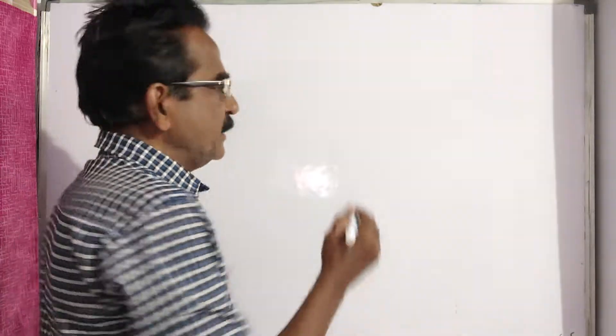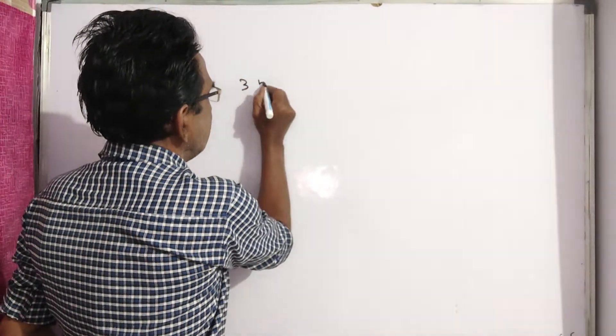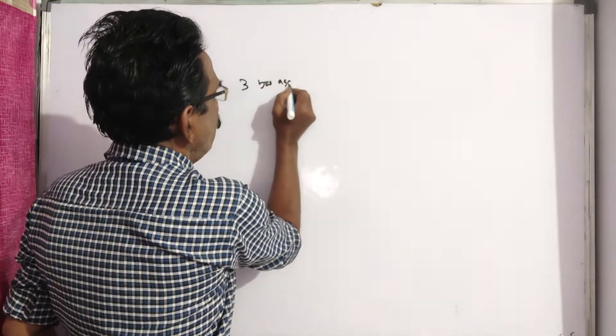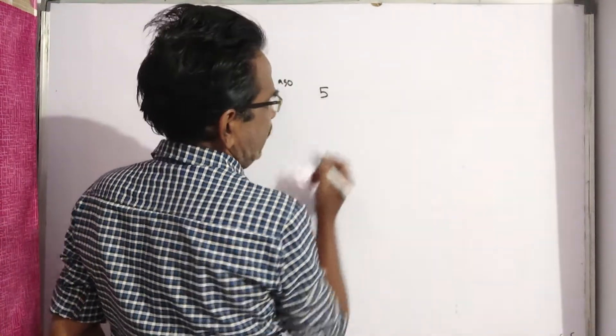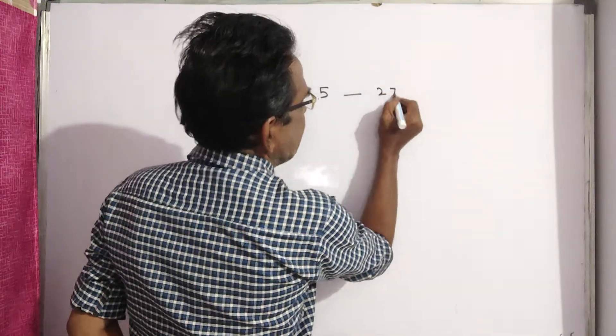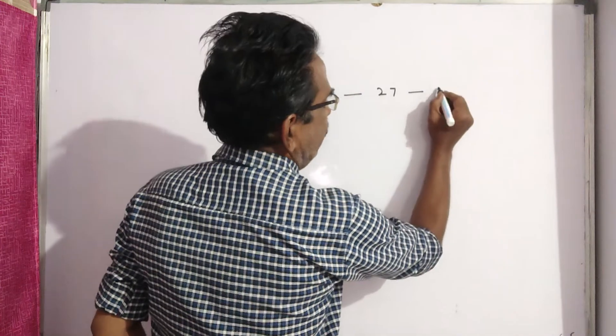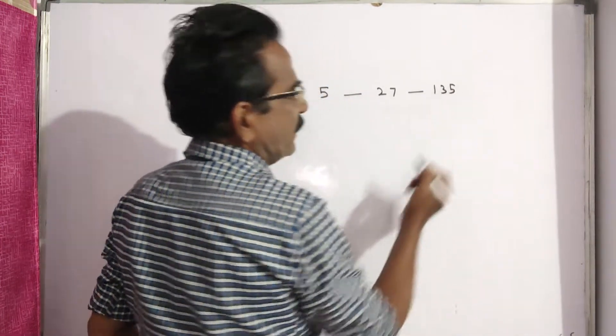This is a simple problem, friends. Three years ago, the average age of five members of a family is 27. So the sum of their ages, five times 27, is 135.